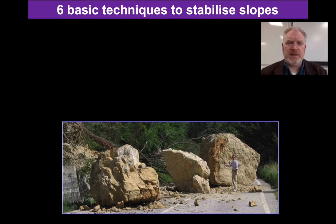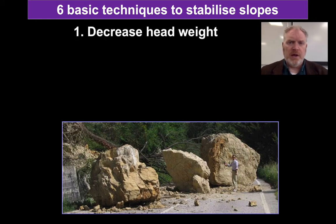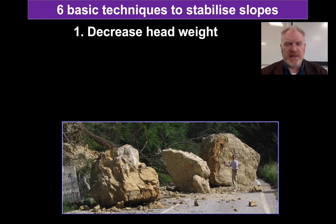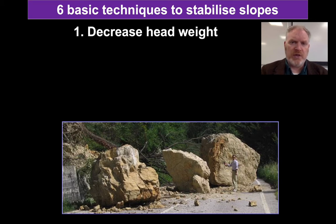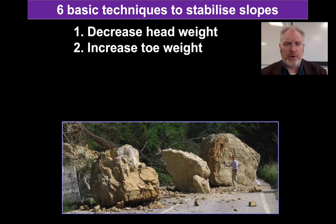There are six basic ways that we use to stabilize slopes — six approaches we can take. The first is to decrease the head weight, which means taking away loose material that may fail. Often this isn't a strategy that can easily be employed; there's a reason that slope is there in the first place, and removing lots of material could well be difficult, almost certainly expensive, and will consume a lot of land. So rather than decreasing the head weight, another way to approach it is to increase the toe weight — the force at the bottom of the slope that holds the rest of the slope back.